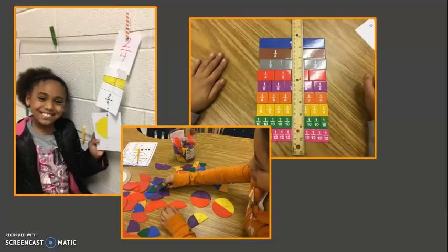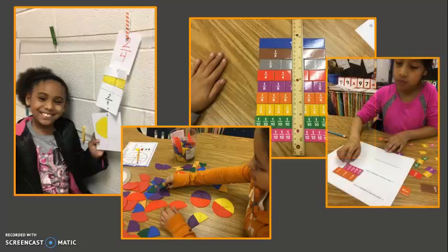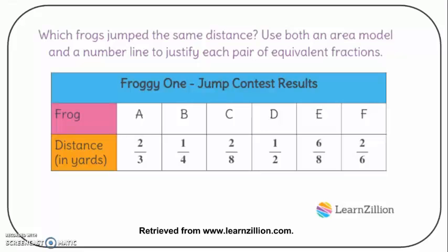They will also generate equivalent fractions with denominators of 2, 3, 4, 6, and 8. This task, retrieved from LearnZillion, encourages students to explore equivalent fractions by analyzing the results of a frog jumping contest. This task builds upon knowledge of unit fractions and how to represent them in various ways. Students were encouraged to use area models and number lines to justify their thinking.